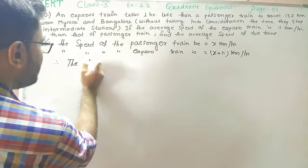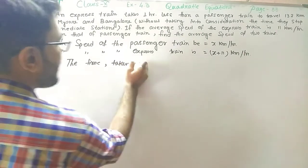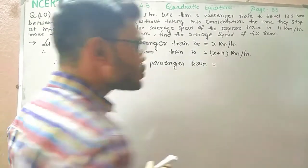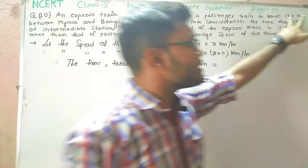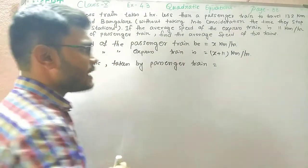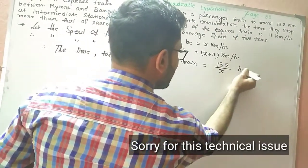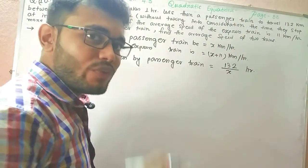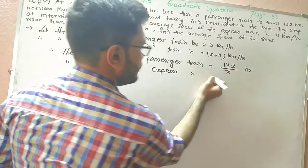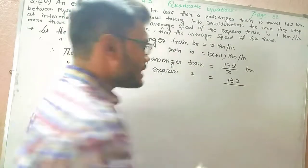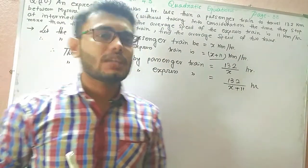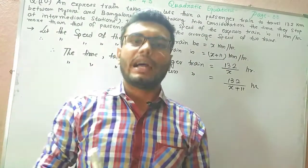Therefore, the time taken by the passenger train is 132 by x, since time equals distance divided by speed and the passenger train's speed is x. By the same way, the time taken by the express train is 132 by x plus 11, since the speed of the express train is x plus 11 km per hour. According to the question, the express train takes 1 hour less time than the passenger train.